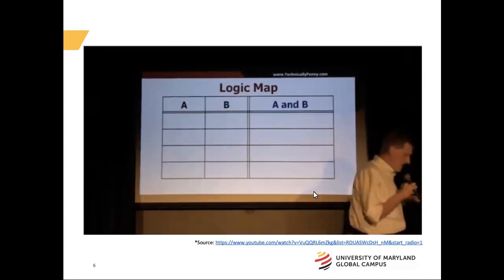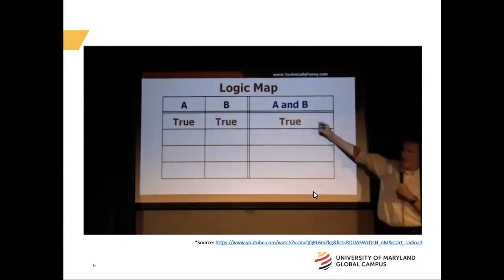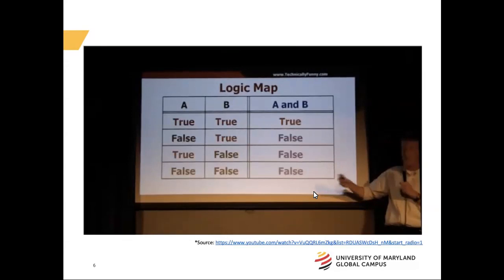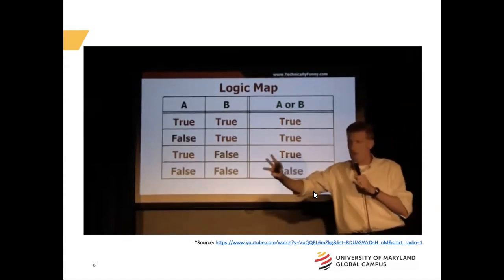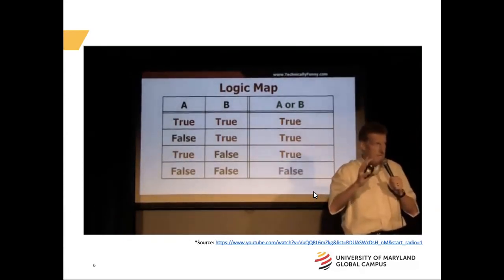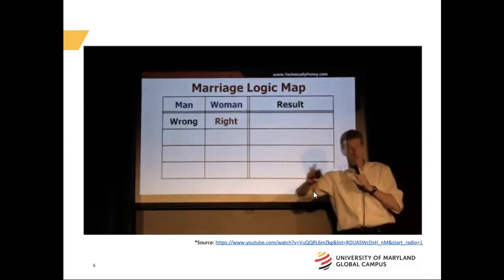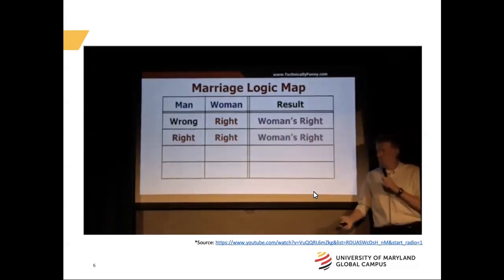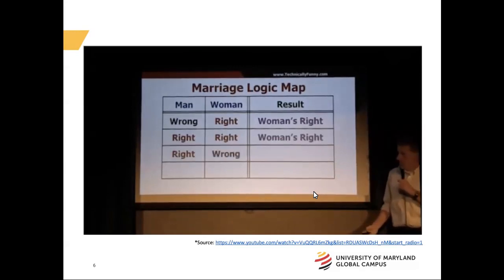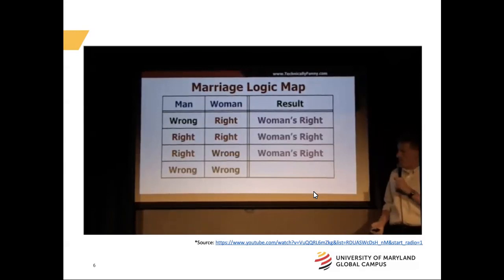He introduced Boolean logic from computer design — an AND gate says both A and B must be true for the output to be true. There's also an OR gate: A or B true gives a true output. He applied this to marriage: if the man is wrong and the woman is right, the woman is right. If both are right, the woman is still right. If he's right and his wife is wrong — doesn't matter, woman's still right. And if they're both wrong, the man is wrong.